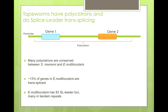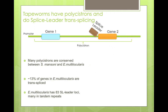One funny thing which we found when we looked at the genes is that tapeworms have polycistrons, and they do splice-leader trans-splicing. A polycistron is a region where you have one promoter shared by several genes, so they get transcribed together, but then you have a splice-leader coming in and breaking up the transcript, so you have two separate transcripts which can be turned into proteins.